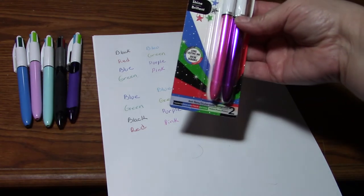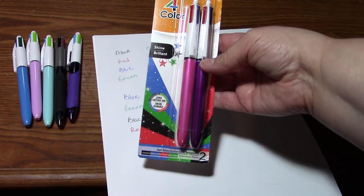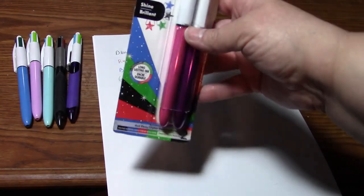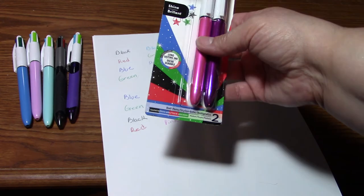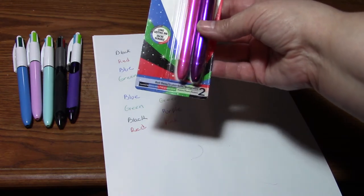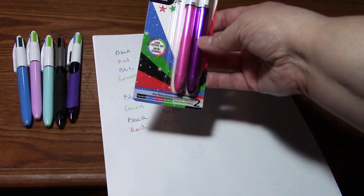You can also find them on Amazon, the four basic colors with a shiny barrel. If you order them off of Amazon, you'll get what colors they send you, which is not bad.